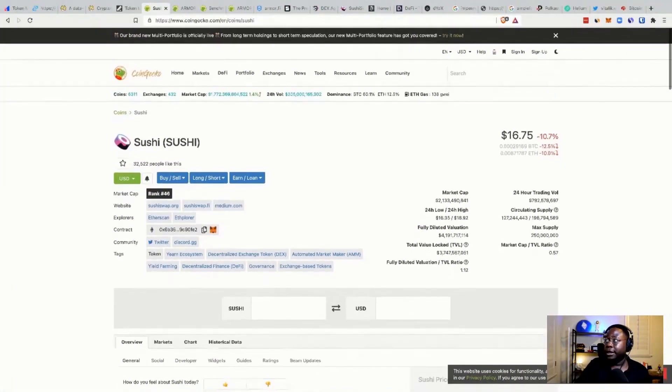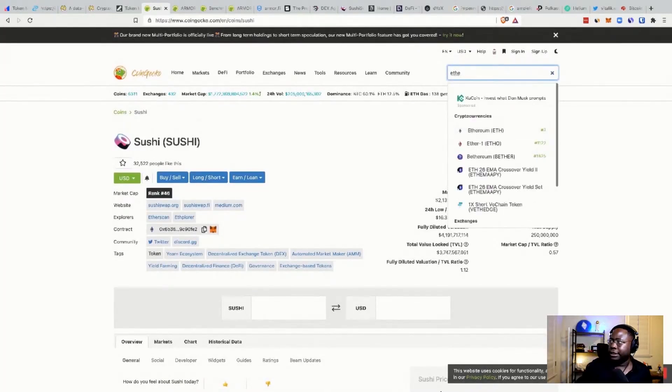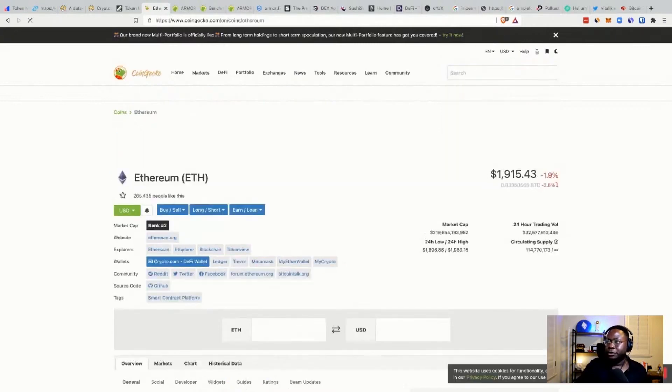For example, Ethereum has no max supply. But that's not really an issue because it's what we call reducing inflationary. The supply is reducing, and it's basically an asymptote line, I believe, is what it's called. And it's decreasing and getting closer to zero, but never quite hits zero. So if you see here, it has infinity.